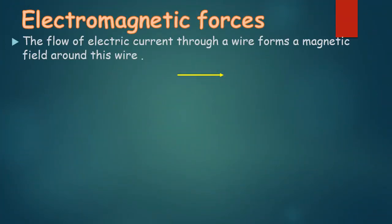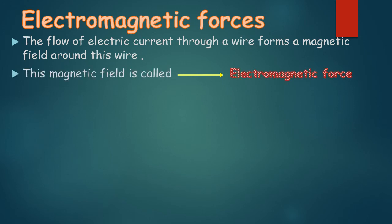Electromagnetic force: The flow of electric current through a wire forms a magnetic field around this wire. This magnetic field is called electromagnetic force.